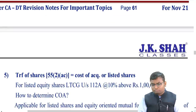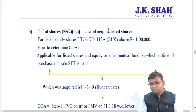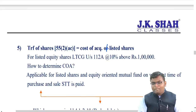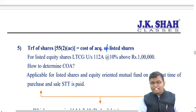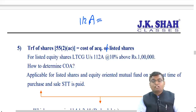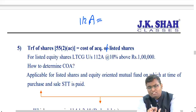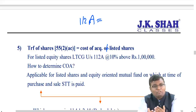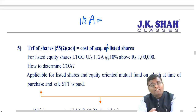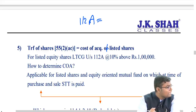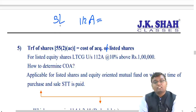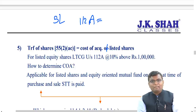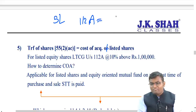Cost of acquisition for listed shares: Section 10(38) exempting LTCG on listed shares has been removed. Section 112A now applies: LTCG on listed equity shares where STT was paid at both purchase and transfer is taxed at 10% above Rs. 1 lakh. Example: LTCG of Rs. 5 lakh - up to Rs. 1 lakh no tax; on balance Rs. 4 lakh, tax = Rs. 40,000 at 10%.